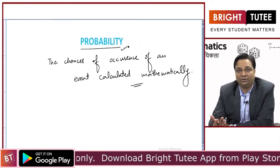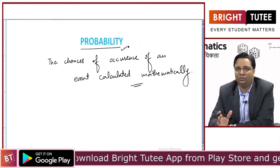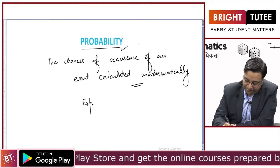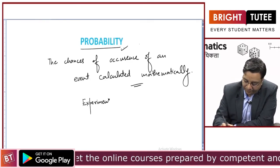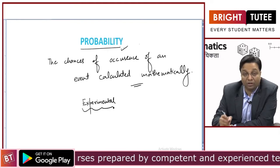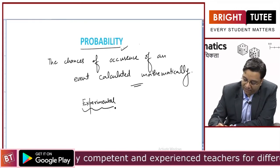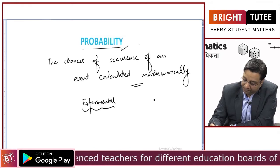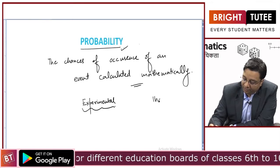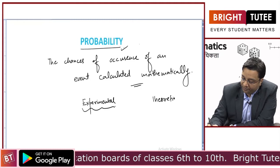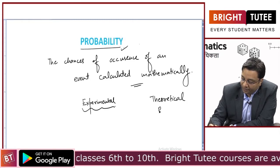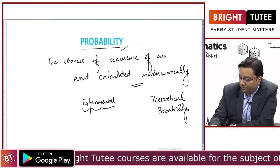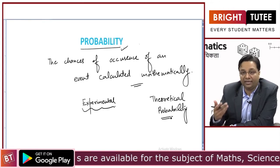Probability can be broadly of two types. One is experimental probability, which is what we will talk about in class 9th. Another type of probability is theoretical probability, which we will also talk about in class 9th.